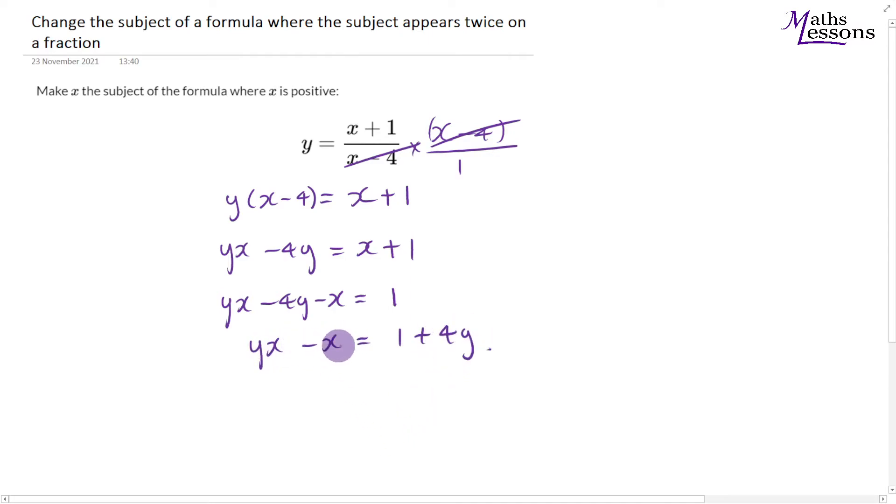Now I've got my x's all on the same side, but I want to get them on their own. You can see I've got a common factor of x. So I'm going to take x out as a factor, leaving just y here. If I take x out as a factor of this, I'm just left with minus 1.